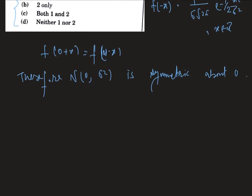Now we have to check the second statement, whether the distribution is complete or not. The pdf of N(0, σ²) belongs to one parameter exponential family.